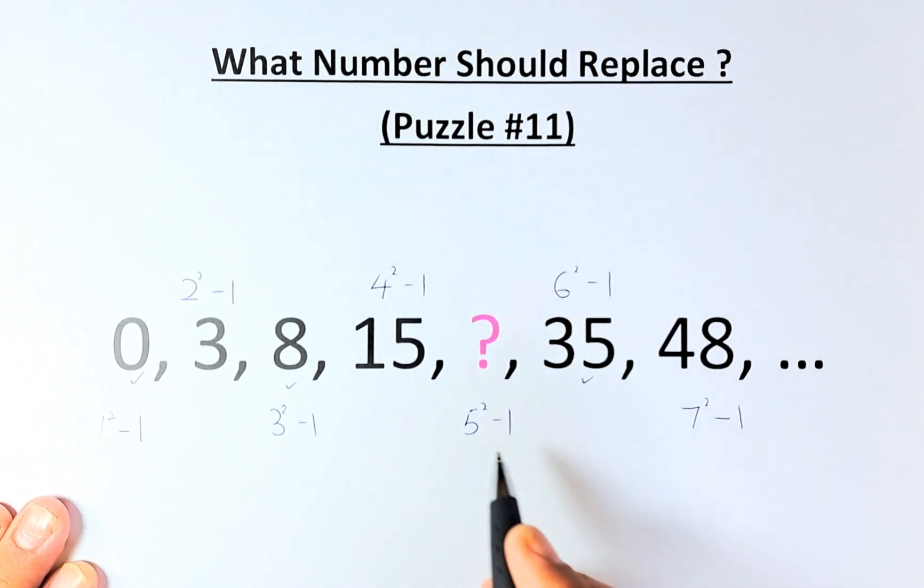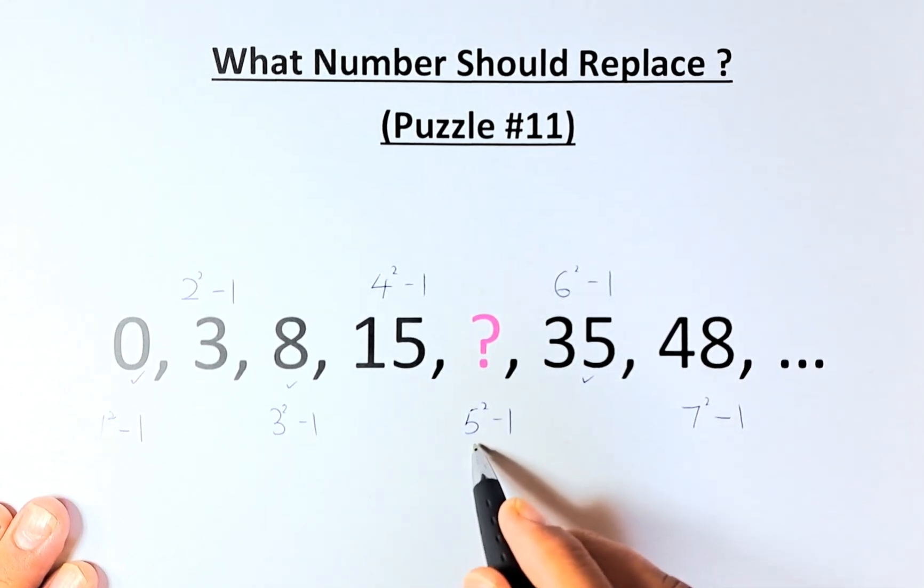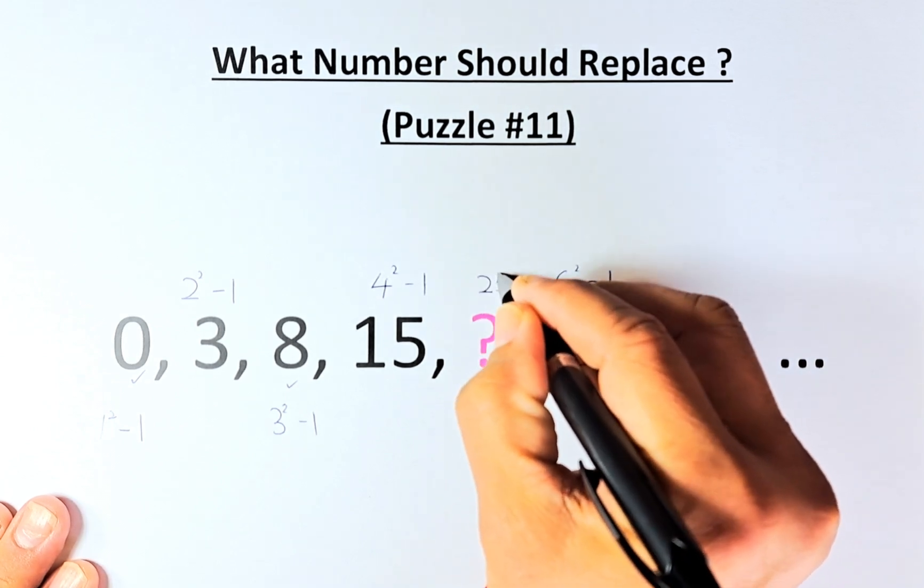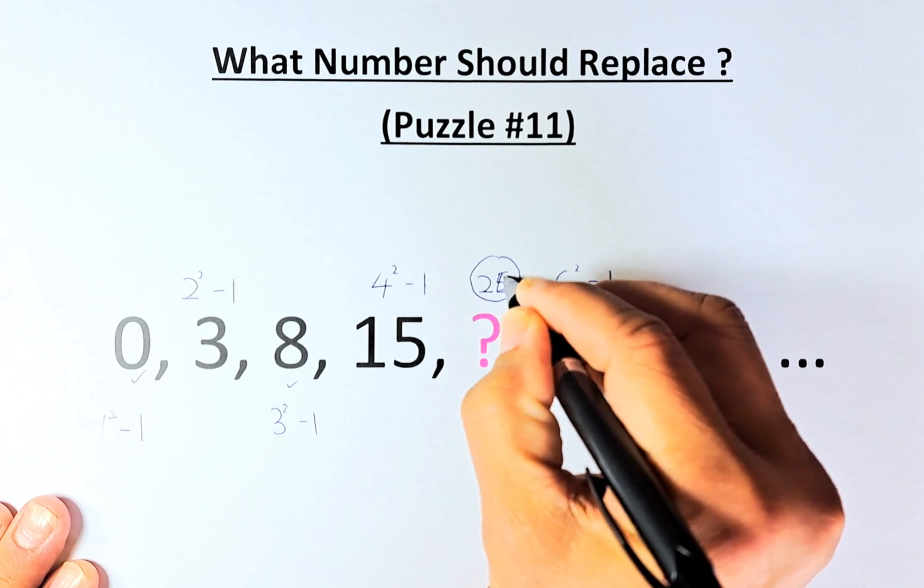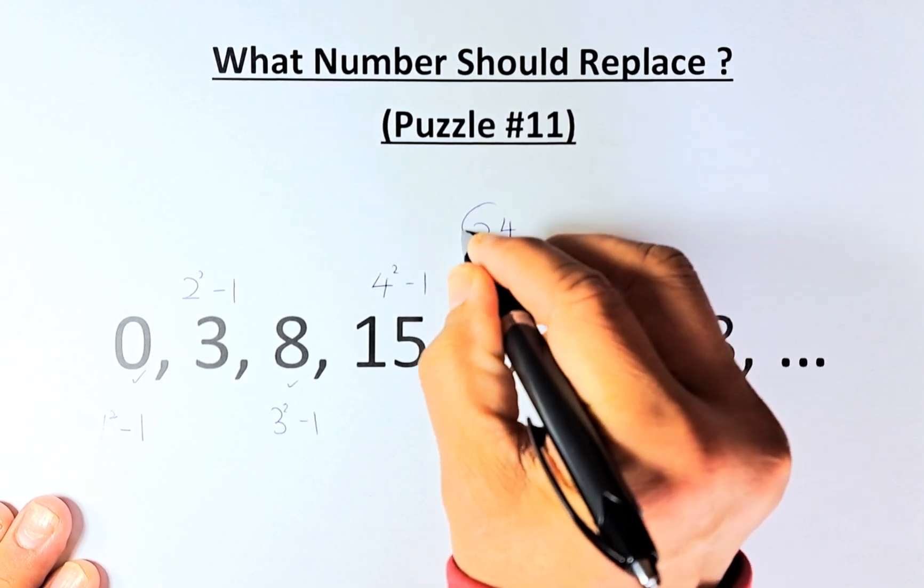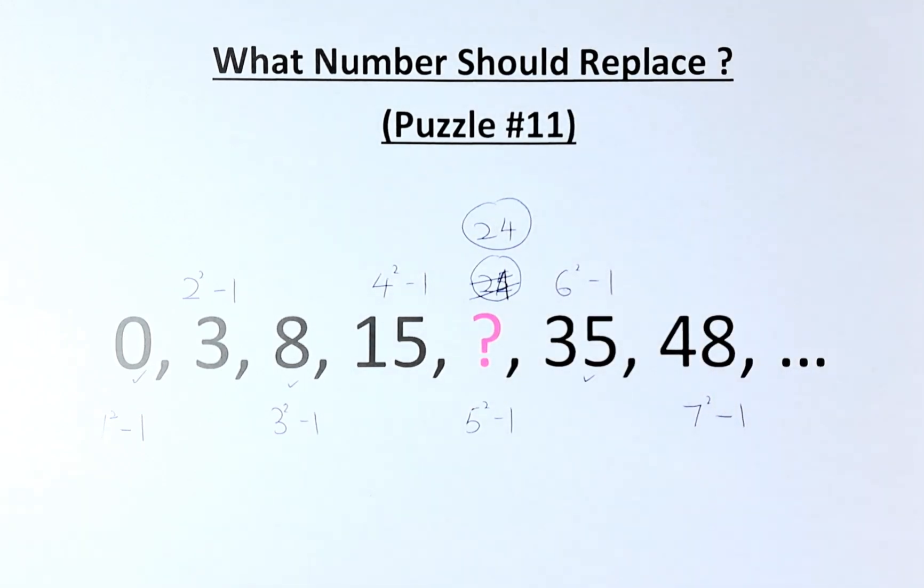We're going back to the question mark, 5 squared minus 1. 5 squared is 25 minus 1. So the question mark is going to be equal to 24. I repeat again, 24. I believe most of you will get it right because you guys are geniuses. I'll see you in the next one and subscribe for more.